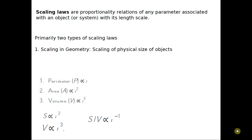Now let us understand what scaling laws are. Scaling laws are basically proportional relations of any parameter associated with an object or system with its length scale. If you have an object or system and you are trying to reduce the size, what happens to the different properties and parameters when the size is being reduced? For example, if I reduce something from 1 meter to 1 nanometer, I consider the length scale with the letter L.